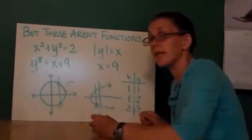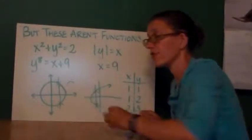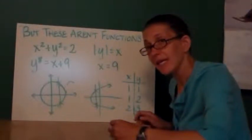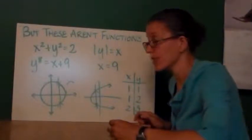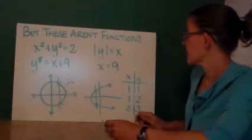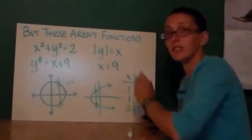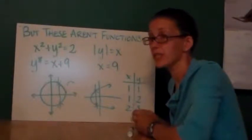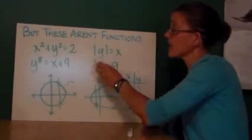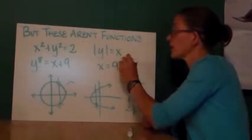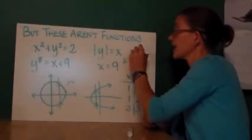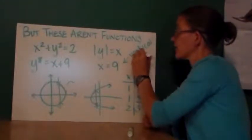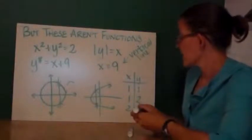Here, the same thing happens again. I draw a vertical line through this parabola, and it intersects the parabola in two locations. These equations, one has a y inside of the absolute value bars. That's a big no-no. This one has no y at all. This is actually a vertical line equation. A vertical line is not a function.